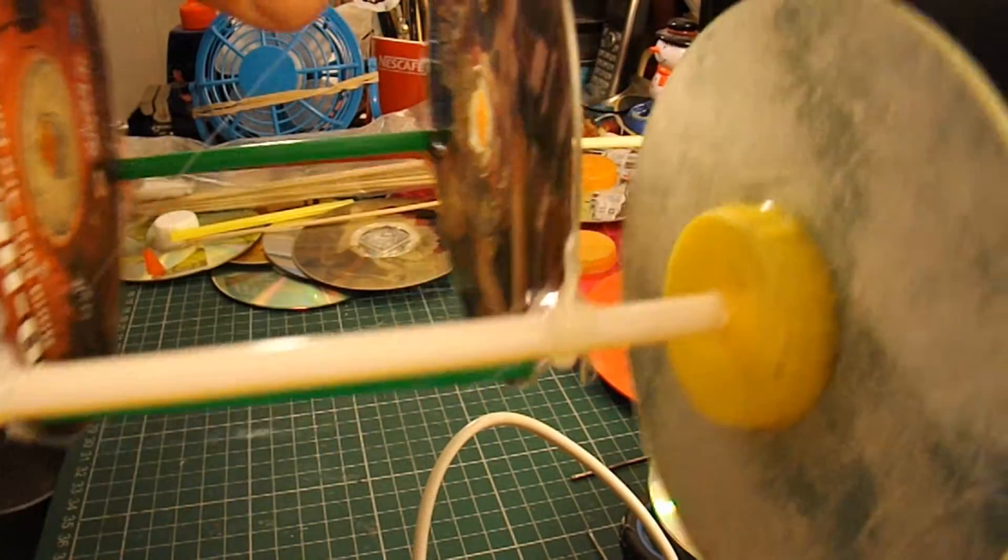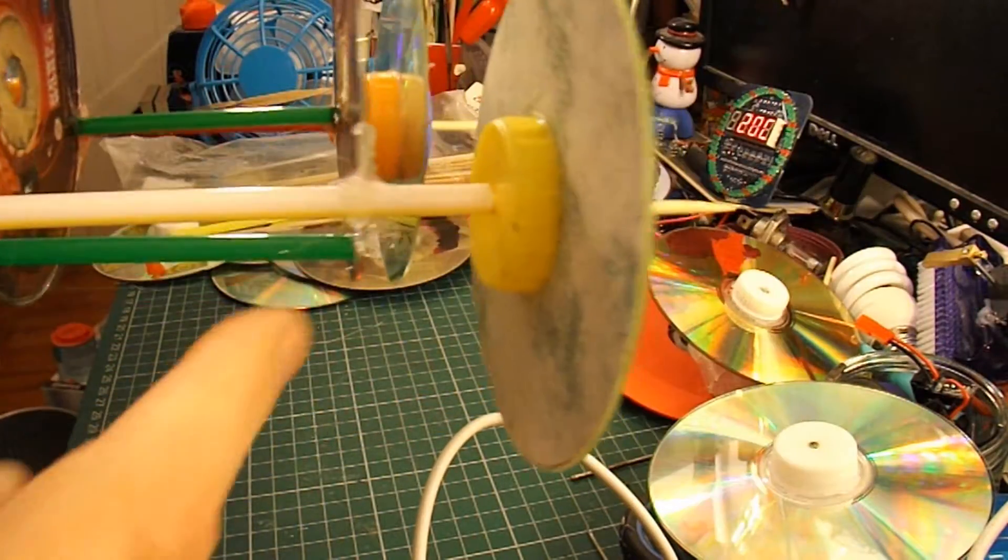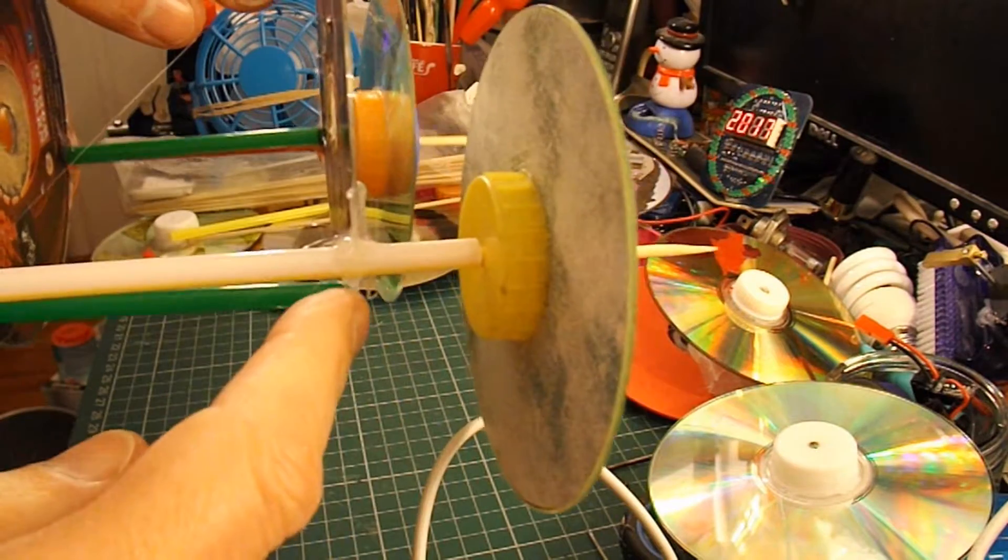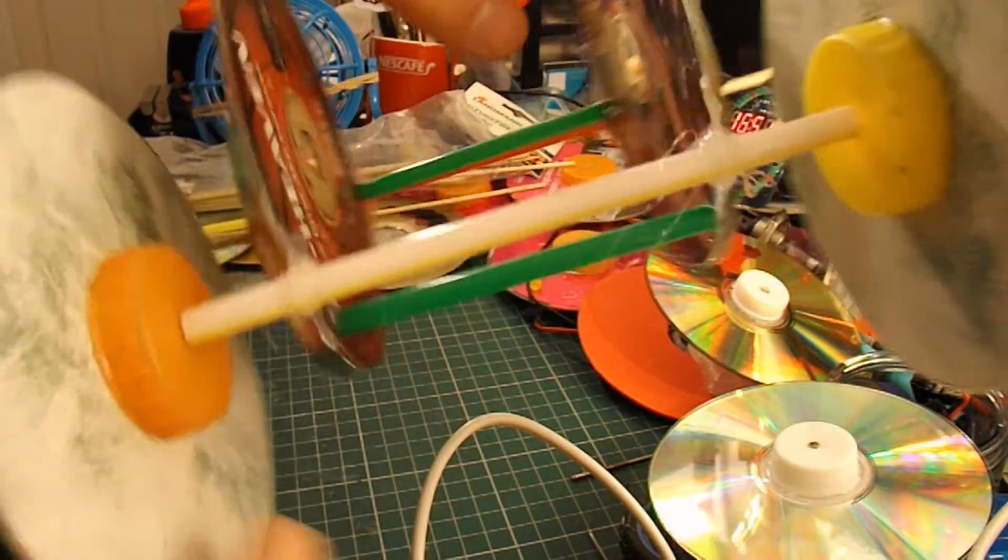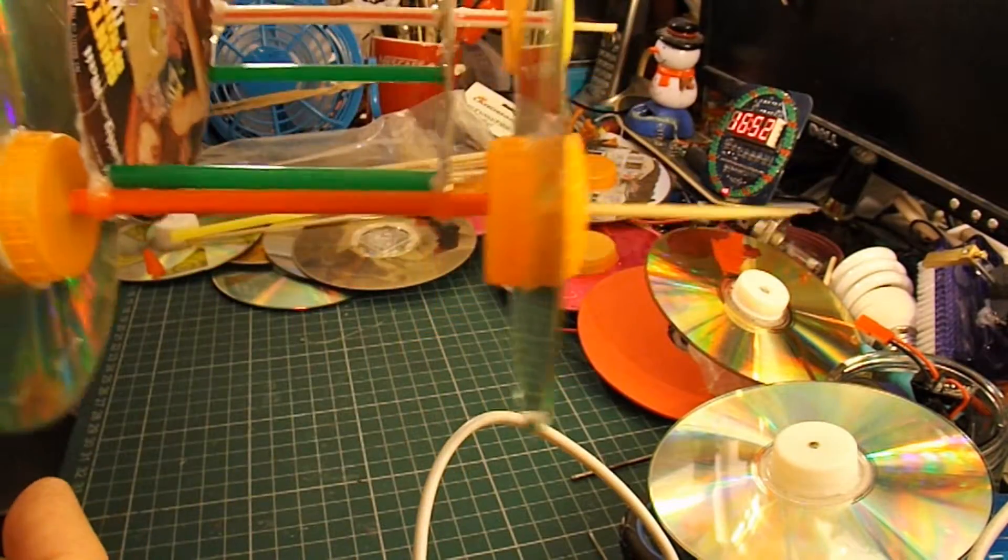So there we are, so far. Lots of hot glue to hold the drinking straw to the edge of the CD. Front and back.